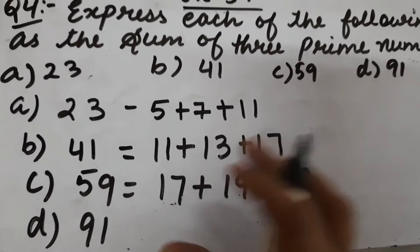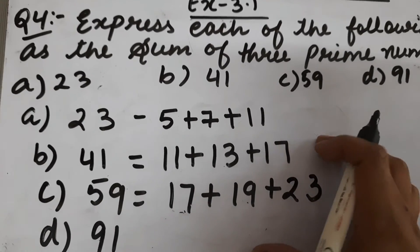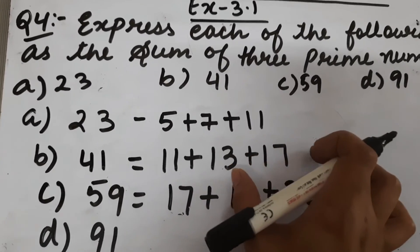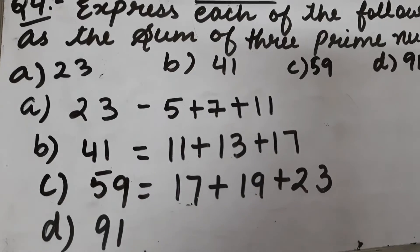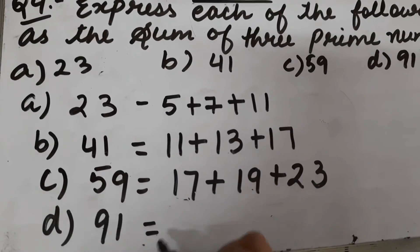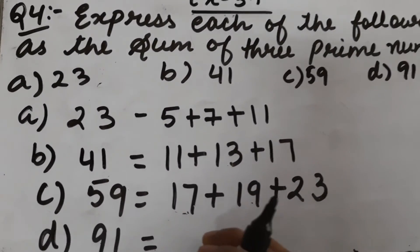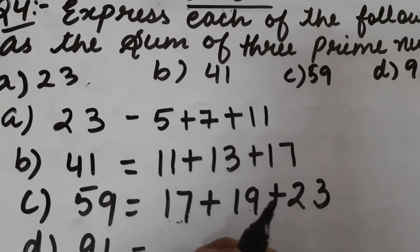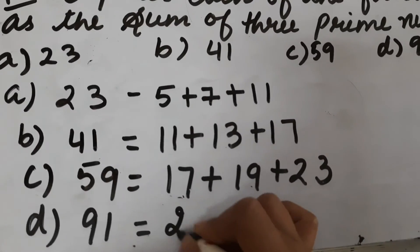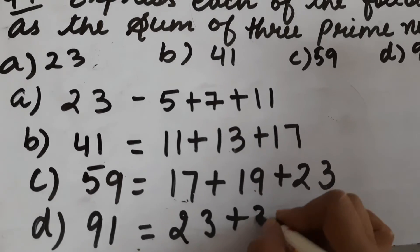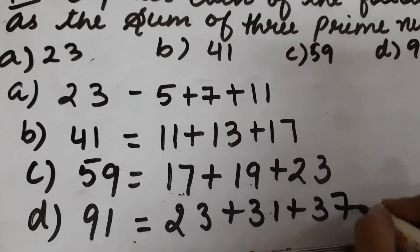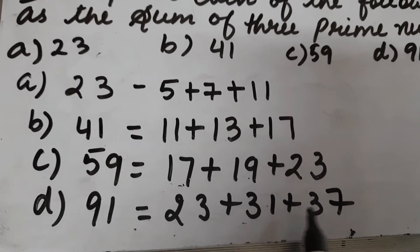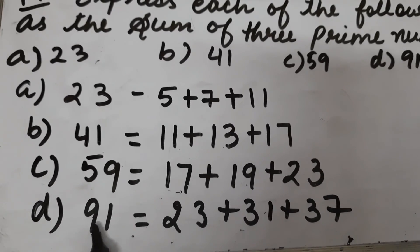The next number you have to check and find by yourself what the sum of which three prime numbers is this. Part D is 91. We have to write 91 as sum of three prime numbers. So I am taking 23, 31, and 37. 23 plus 31 plus 37 is 91.